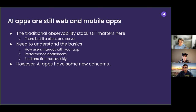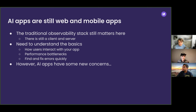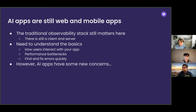The important things to think about with any application: you want to understand how your users are interacting with it, understand performance bottlenecks, and be able to find and fix errors quickly. All of this is still very relevant today, and all of the existing OpenTelemetry tooling and baseline instrumentation is still very important even for AI applications. However, AI apps do have some special considerations.